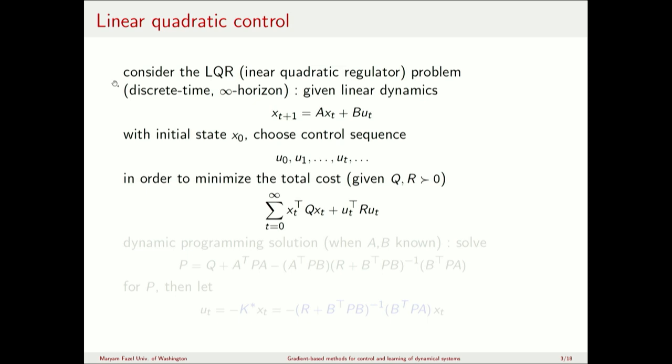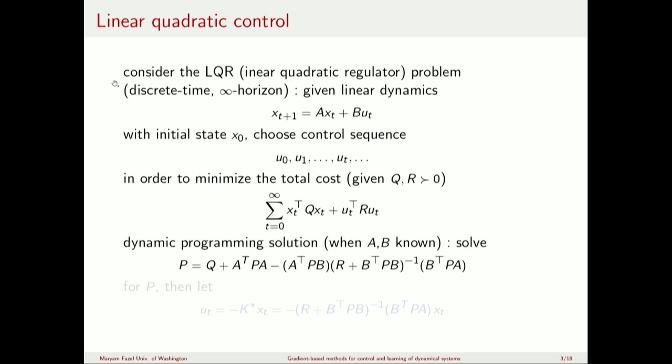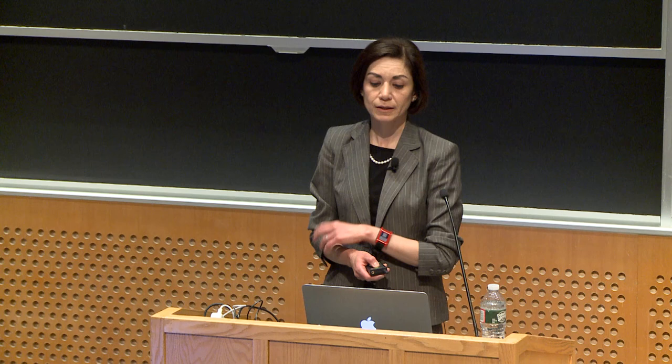We look at an infinite horizon control problem, choosing a sequence of inputs U0, U1, and so on, to minimize a total quadratic cost — the summation of Xt-transpose Q Xt plus Ut-transpose R Ut — where R and Q are cost matrices. This captures making the state small and keeping the control effort small, measured in some weighted L2 norm captured by R.